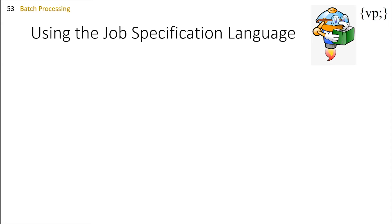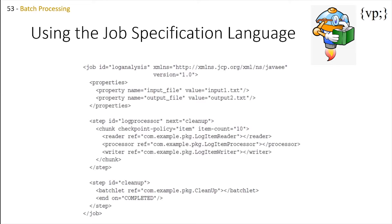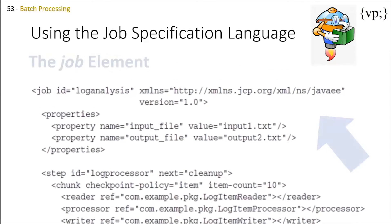Now let's take a look into using job specification language. The job specification language enables you to define the steps in a job and their execution order using an XML file. The following example shows how to define a simple job that contains one chunk step and one task step. Let's explain what's going on here. First of all, the job element.